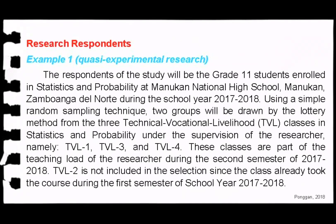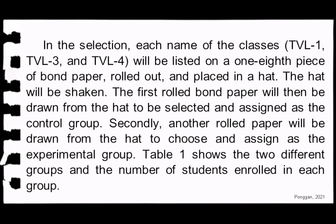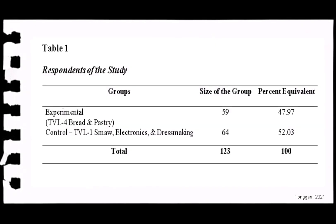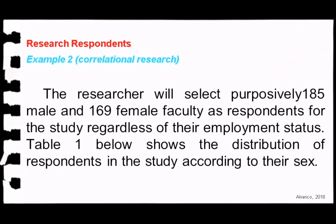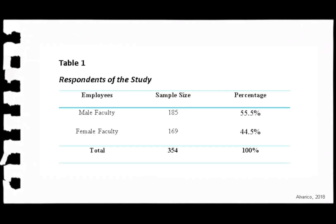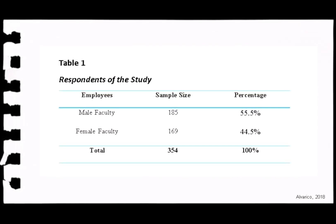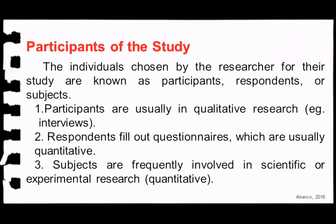The following is an example of a quasi-experimental research indicating the research respondents. The following is an example of a correlational research presenting the respondents of the study. The first two exemplars are examples of quantitative research design. For qualitative research design, the following is an example.